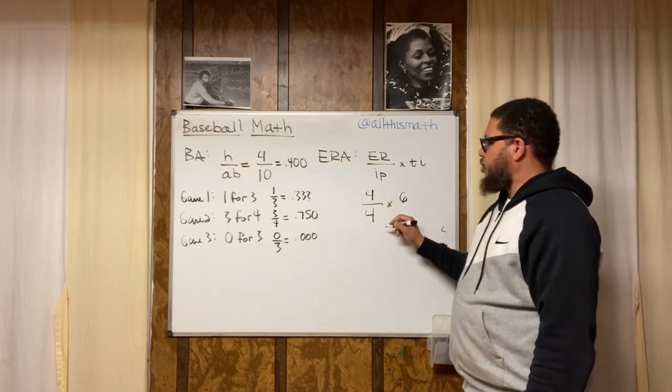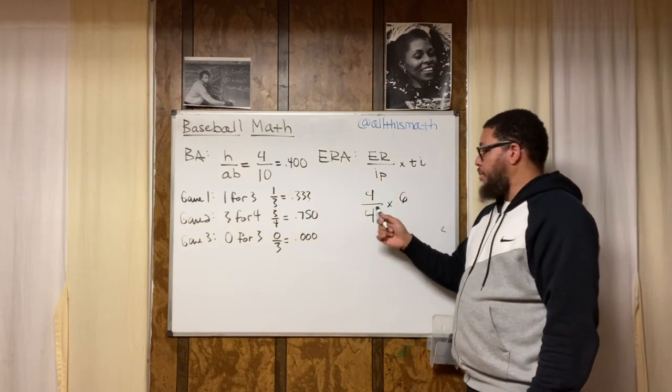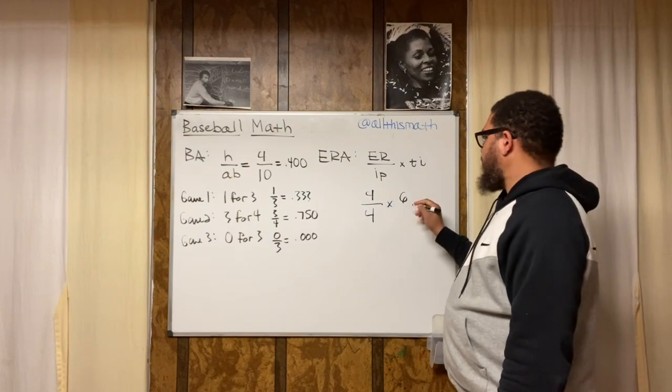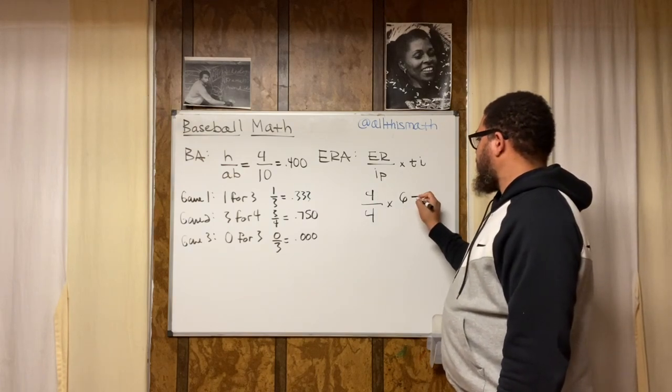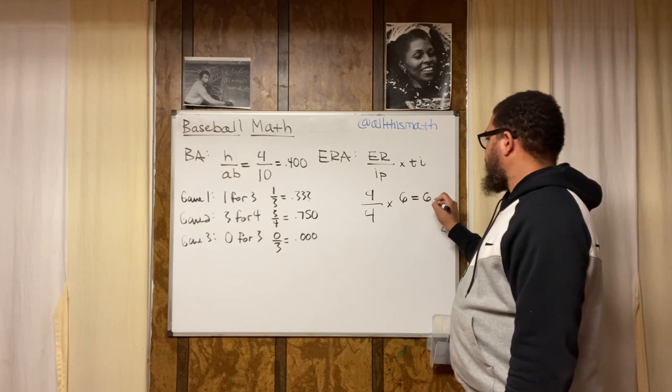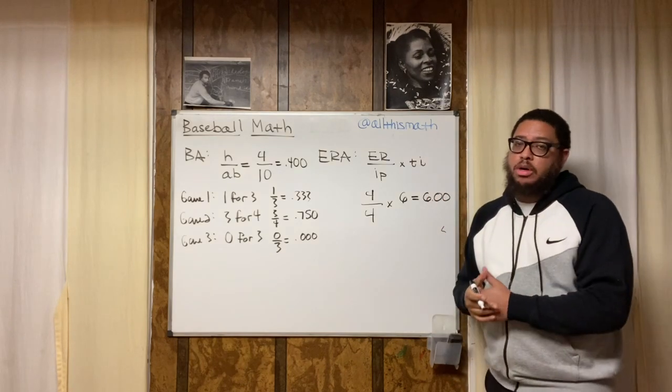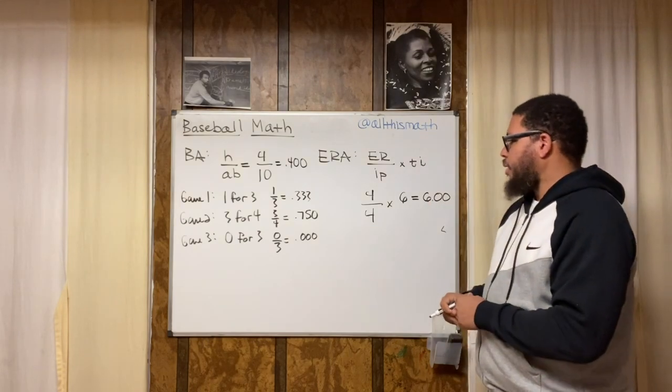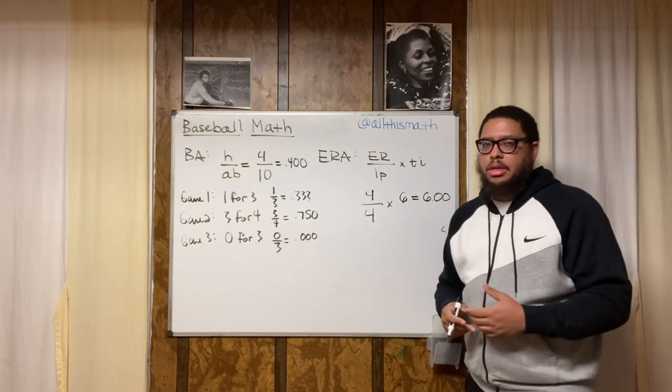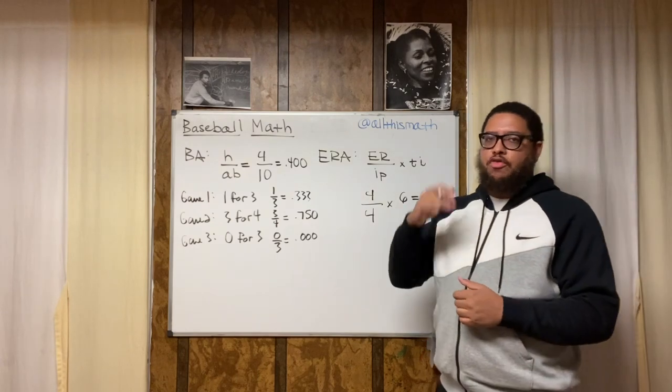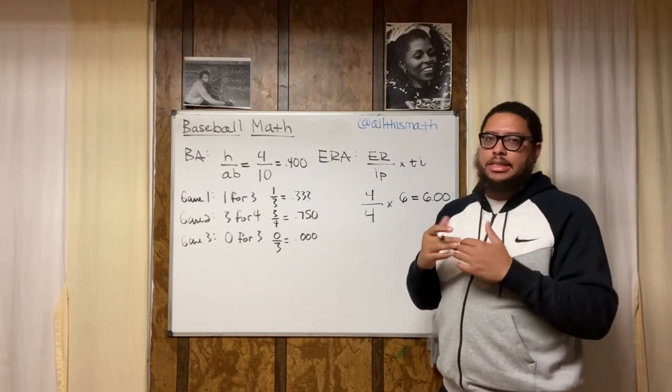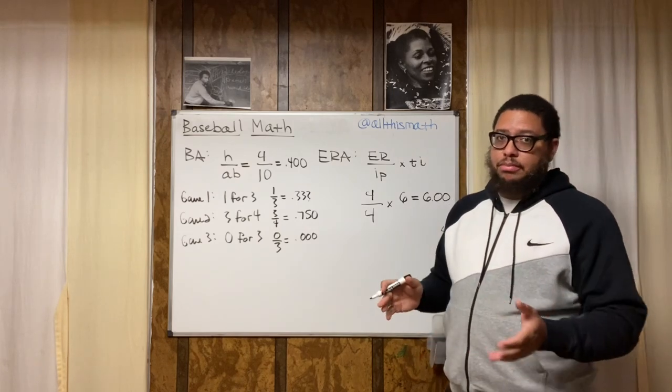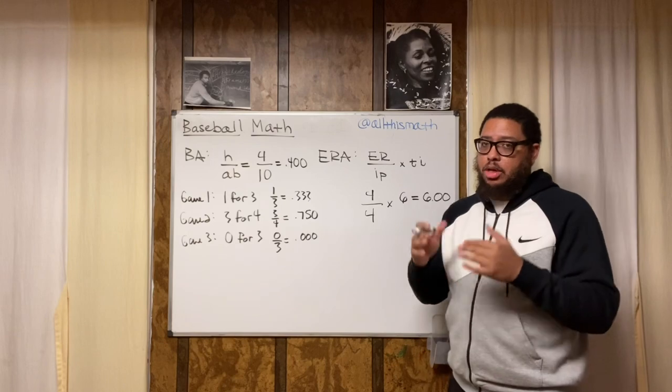So our ER is going to be four. We're going to replace the earned runs with a four. And they only pitched for four innings. And the whole game had a total of six innings. So what you would do is, I mean, there's a couple of ways we could do this. You could do four divided by four and then multiply that by six. Four divided by four is going to be one. One times six is going to be six. So that's 6.00. And with the ERA, you want to round that to two decimal places. So 6.00, which is considered to not be that good because you want to keep your ERA below four. Anything below four is seen as good. Anything below three is even better. And if it's below two, that's great. Somebody with an ERA below two, that means you hardly aren't giving up no earned runs.